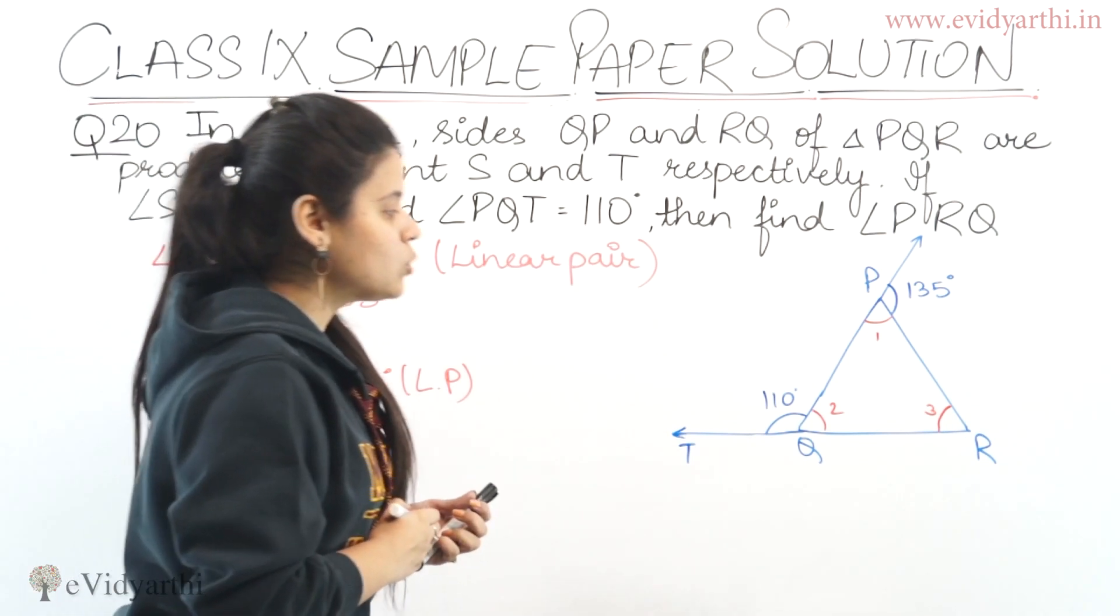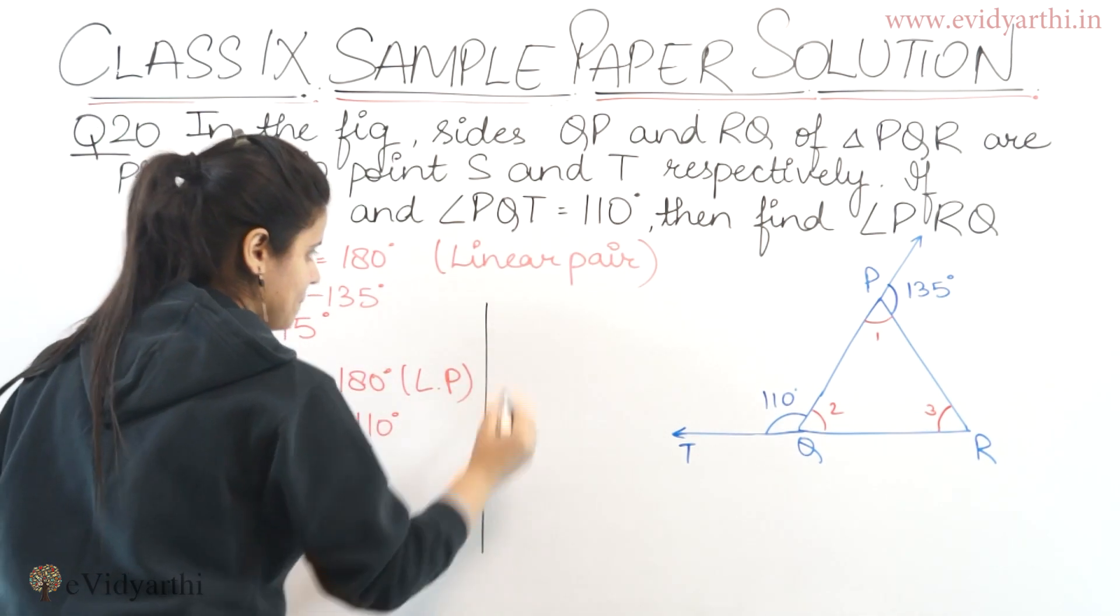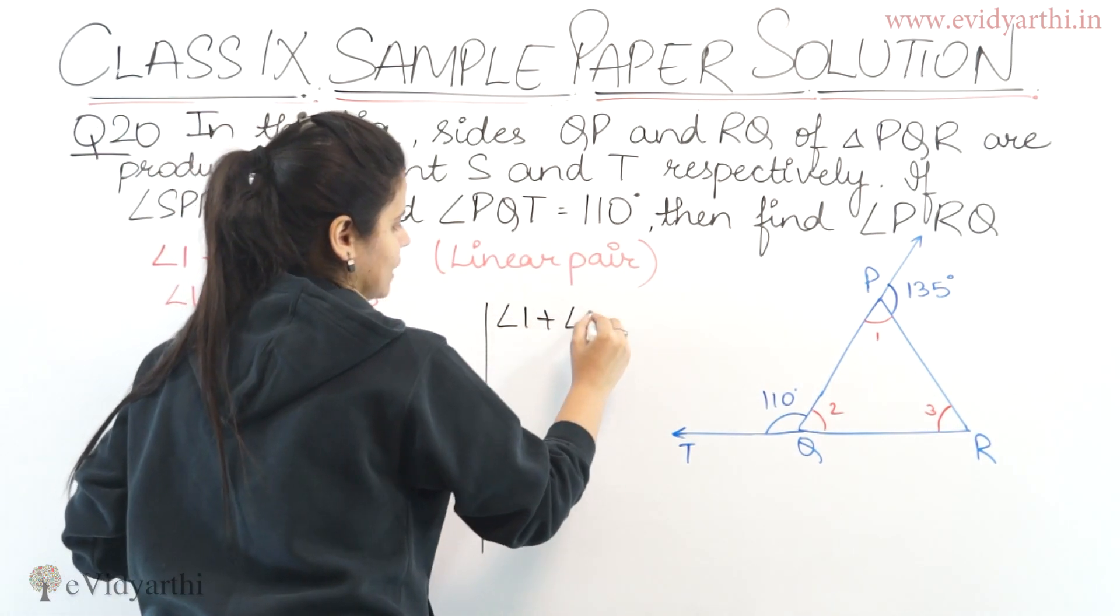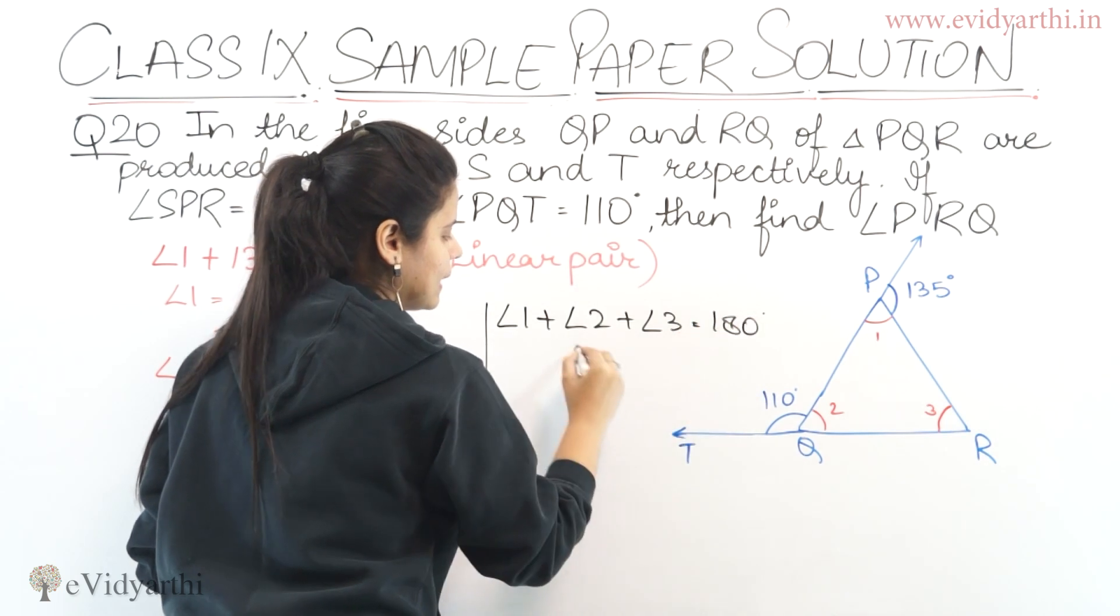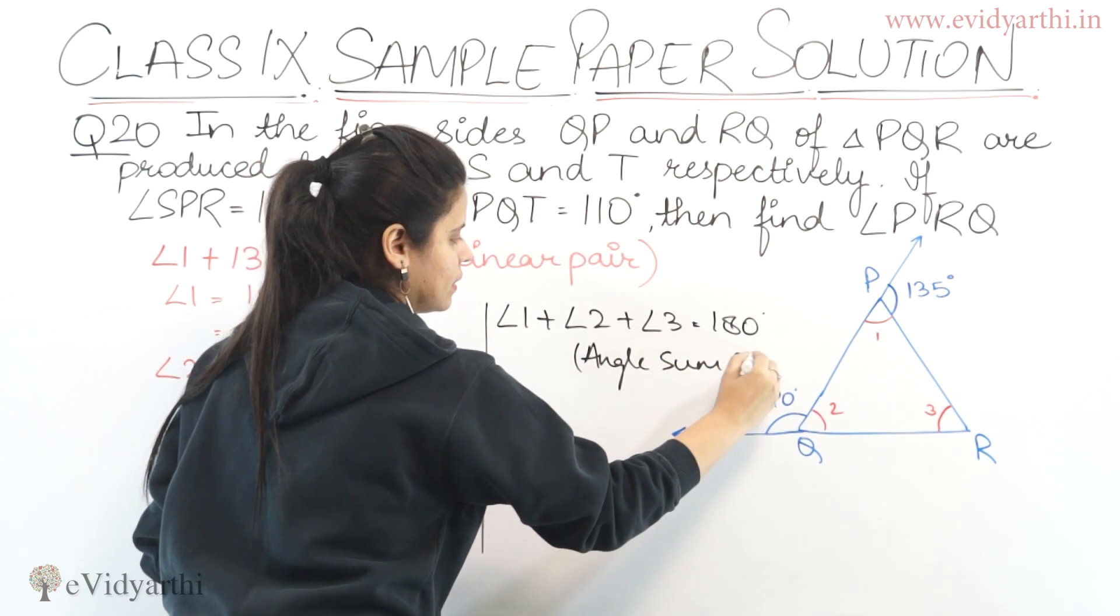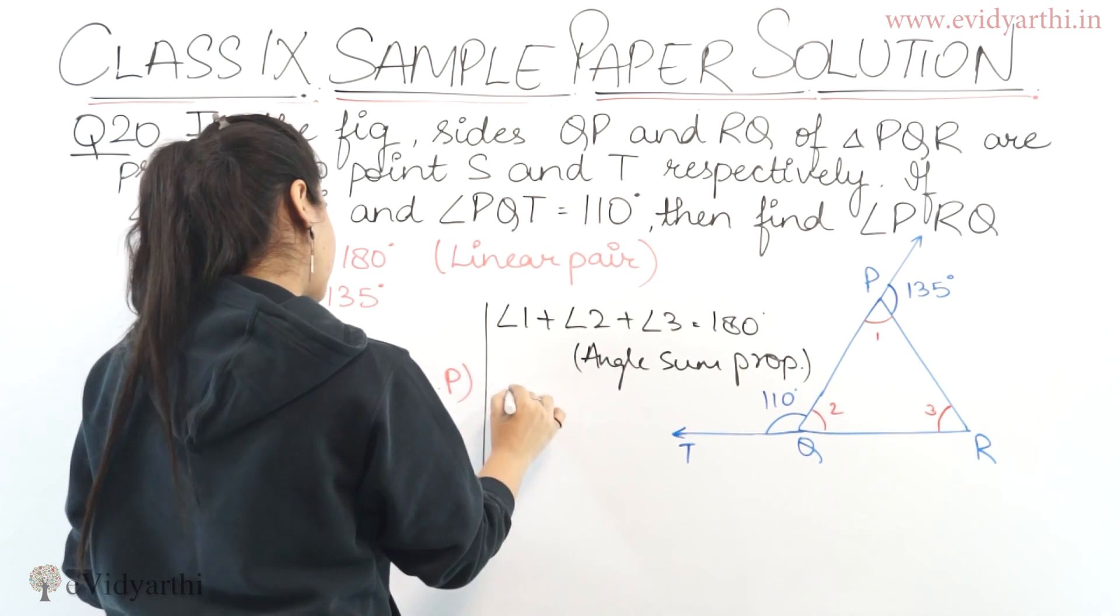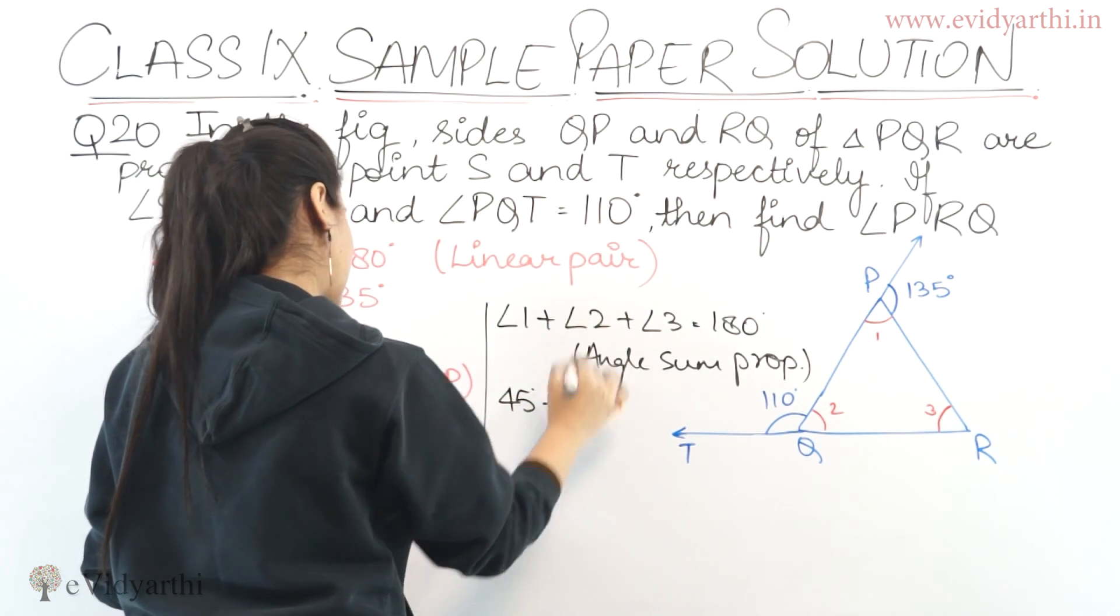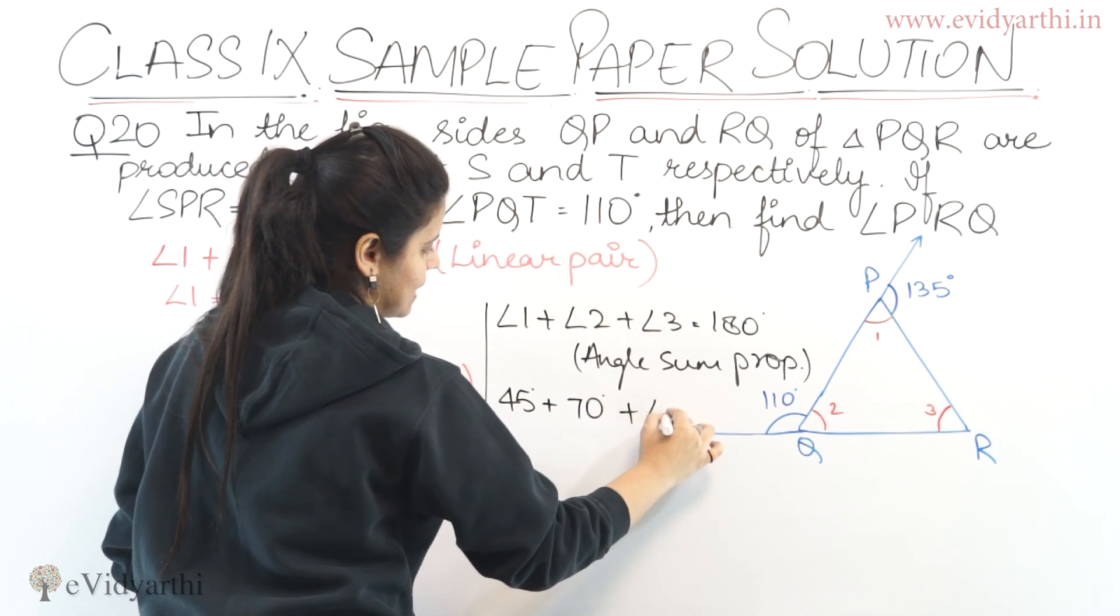Now we have angle 1 and angle 2, so we can find angle 3. How? Angle 1 plus angle 2 plus angle 3 equals 180. Why? Because of the angle sum property.